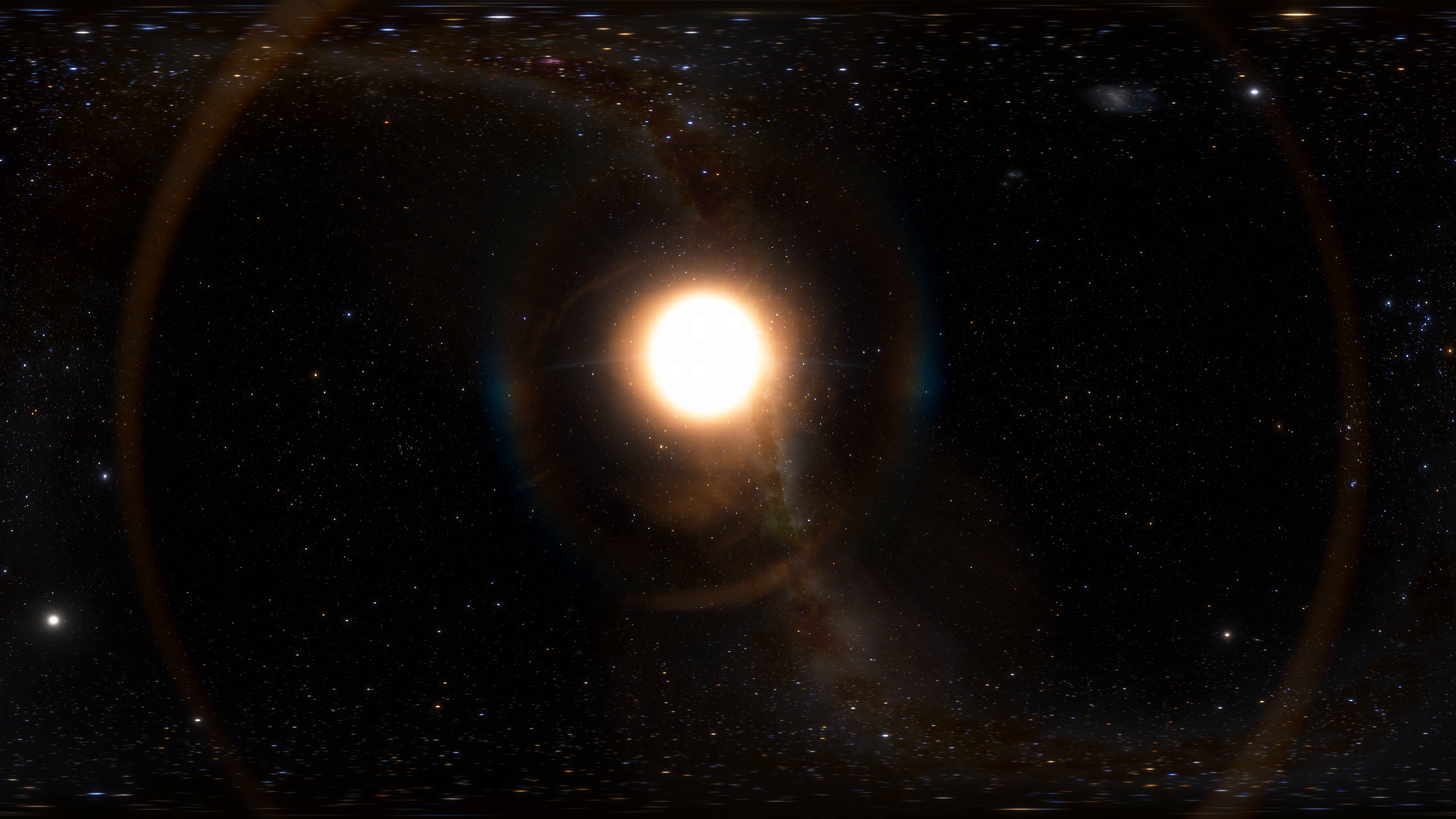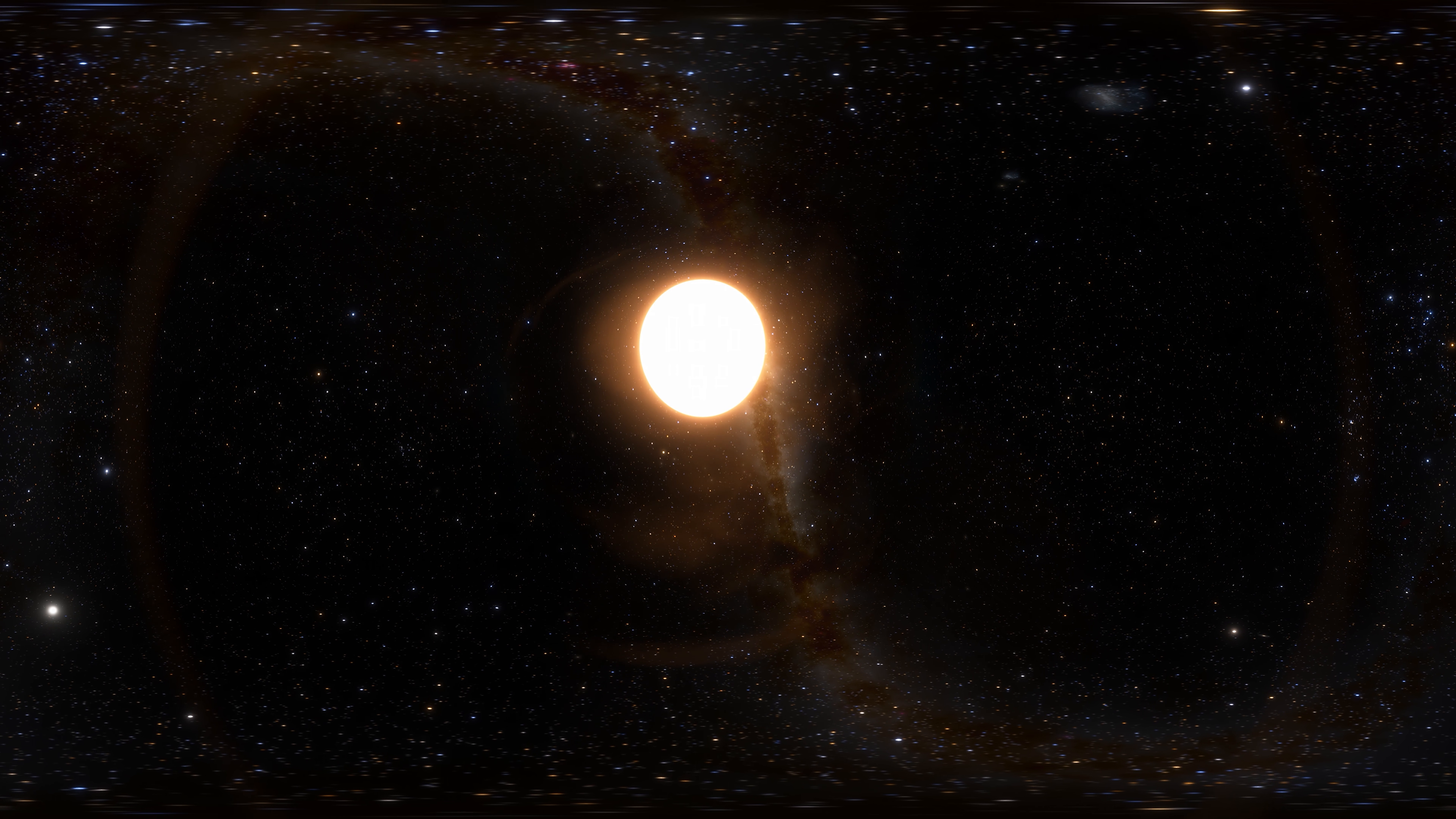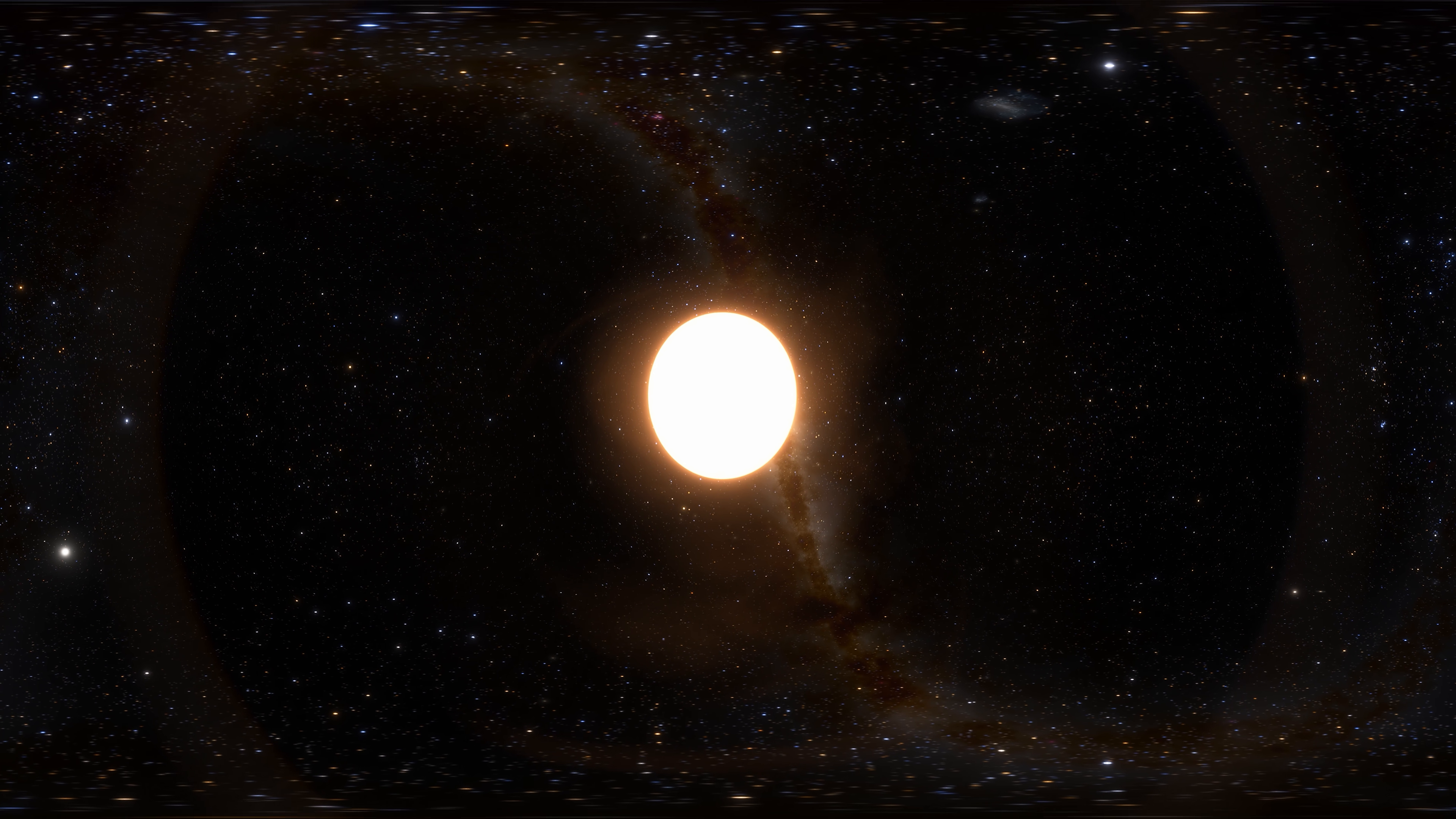The temperature of Pollux's surface is approximately 4,666 Kelvin, which is about 1,270,000 degrees Celsius. The brightness of Pollux is 46 times bigger than the Sun.